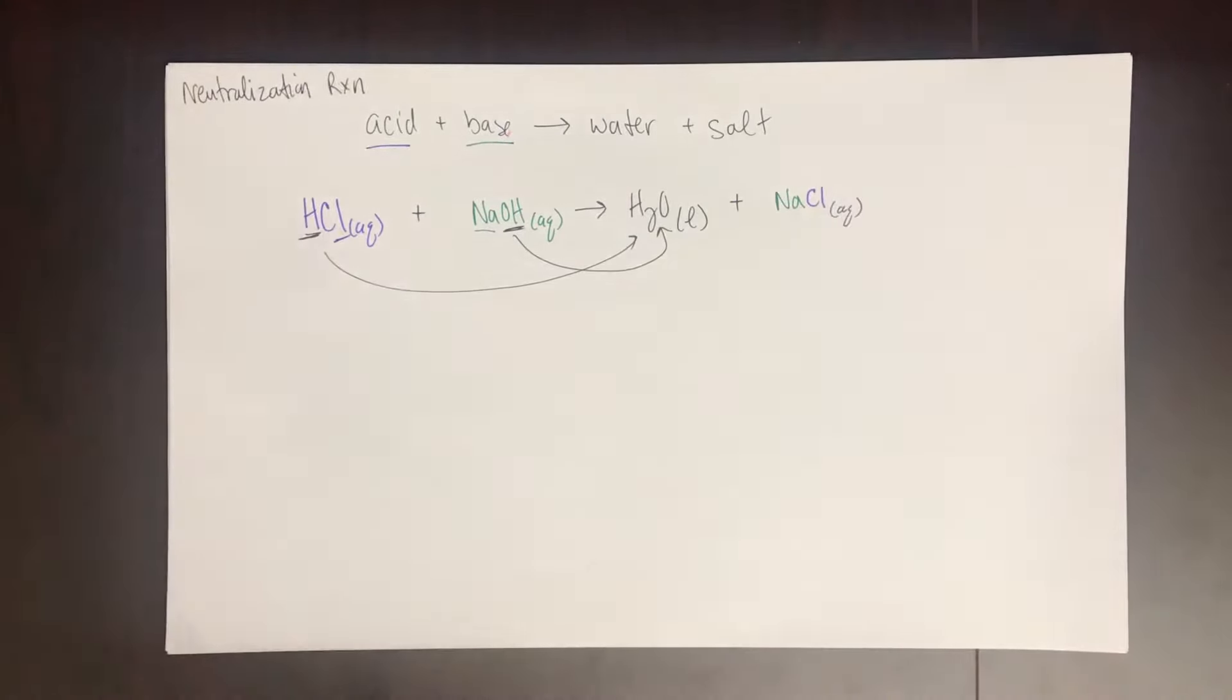So we've written a neutralization reaction. A neutralization reaction is an acid plus a base. It produces water plus salt. There are some examples of acids that when they react with bases, they will produce water, salt, and a gas. A gas like carbon dioxide or sulfur dioxide or something like that.